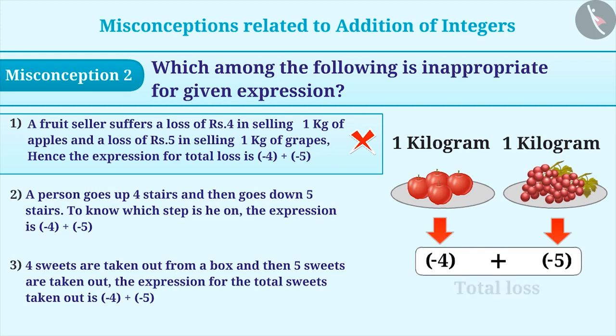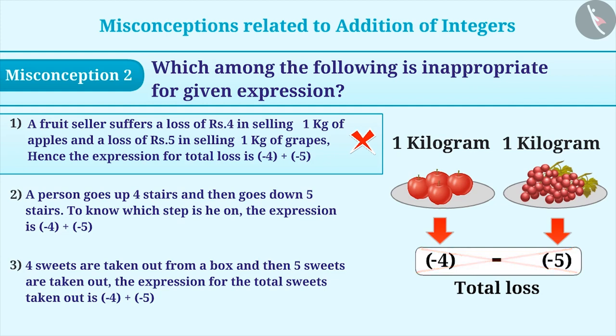Sometimes, to find the loss, calculation is done and the statement is represented as minus 4 minus minus 5. This is an incorrect way to represent the situation. The correct way to express it is minus 4 plus minus 5.